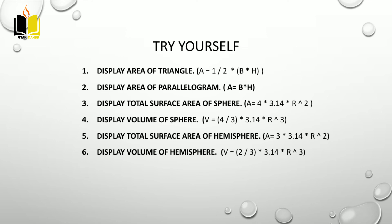Area of triangle is equal to 1 by 2 base into height. Parallelogram area is equal to base into height. Total surface area of sphere is equal to 4 pi r square. This is the formula. Total surface area of hemisphere is 3 pi r square formula.